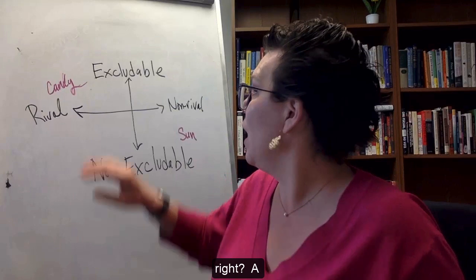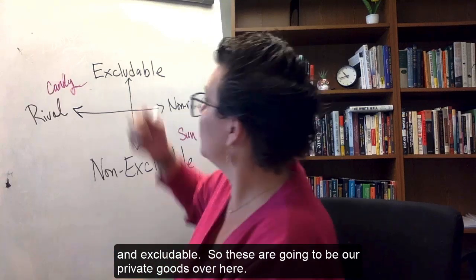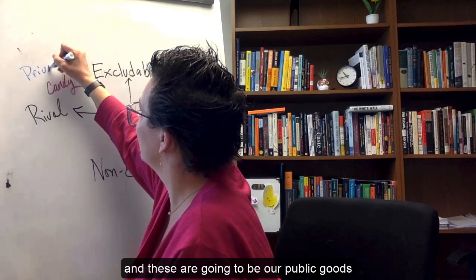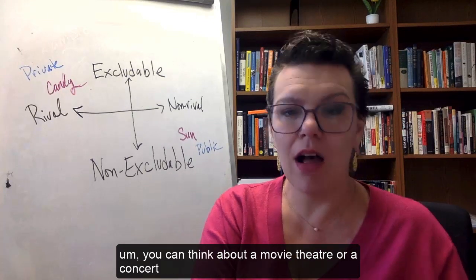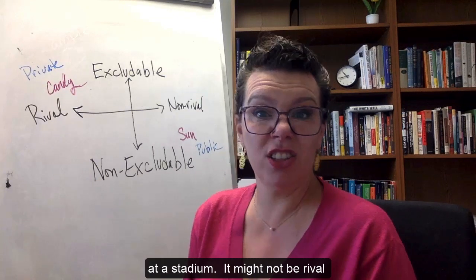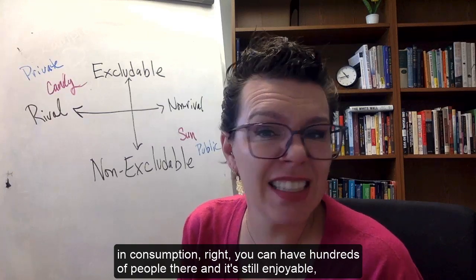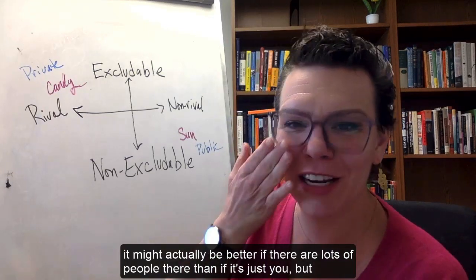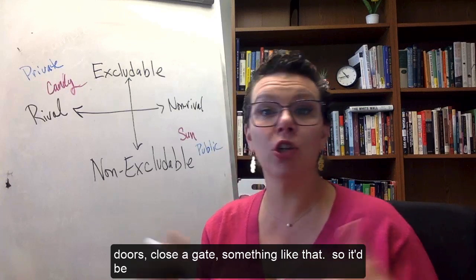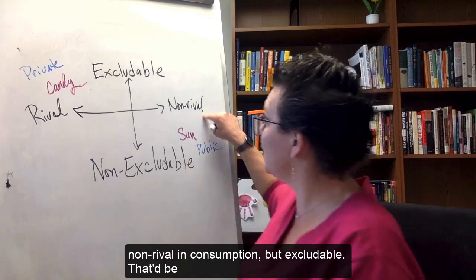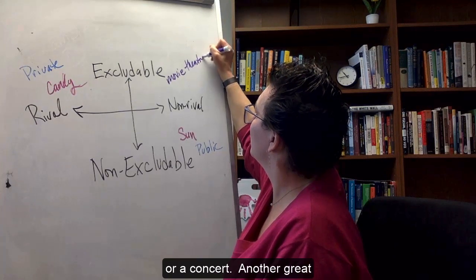Some goods are both non-rival in consumption and non-excludable — those are considered public goods. A private good is rival in consumption and excludable. Some goods are a little more complicated. You can think about a movie theater or a concert at a stadium — it might not be rival in consumption, you can have hundreds of people there and it's still enjoyable. But they can exclude people from it pretty easily — they can lock doors, close a gate, something like that. So a movie theater or concert would be non-rival in consumption but excludable.